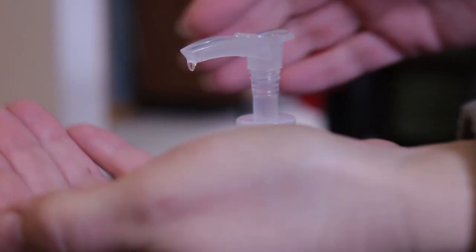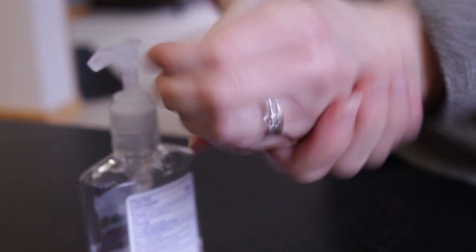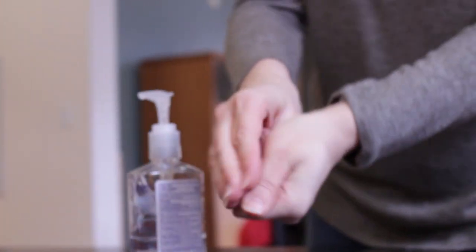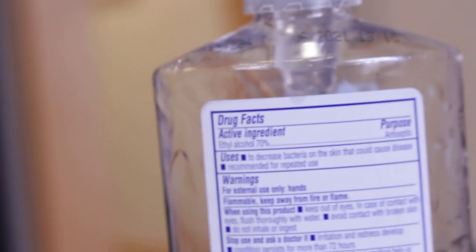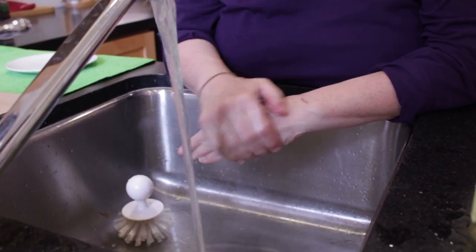When soap and clean water are not available, use hand sanitizer to clean your hands. Hand sanitizer does not remove all types of germs or work well when hands are dirty or greasy. Use hand sanitizer that contains at least 60% alcohol. Wash hands with soap and water as soon as they are available.